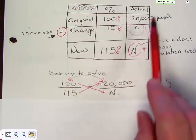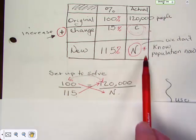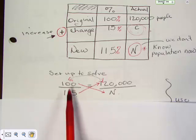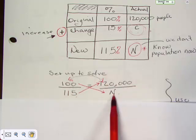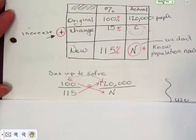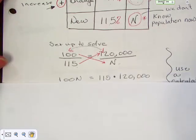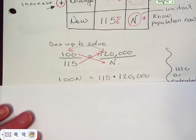Once we have this filled in we can set up the problem and solve it. So we really don't need this middle anymore once we have this all set up for this problem anyway. Because what we need is we need the hundred percent, the hundred and fifteen percent, the hundred and twenty thousand people, and the new population. So you set it up: 100 over 115 equals 120,000 over N.